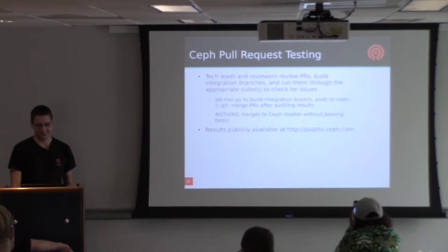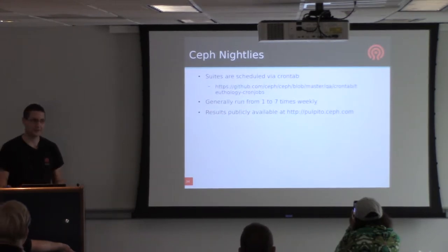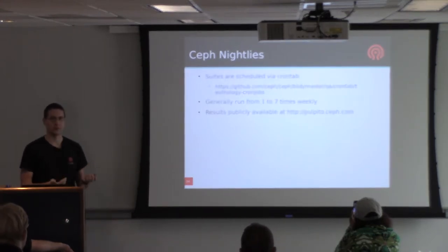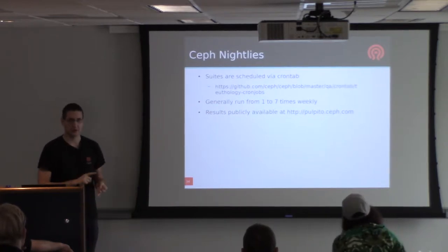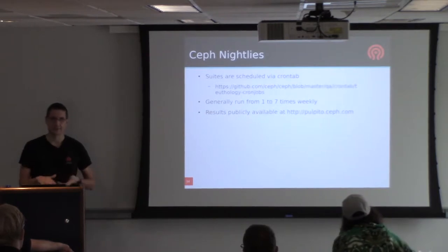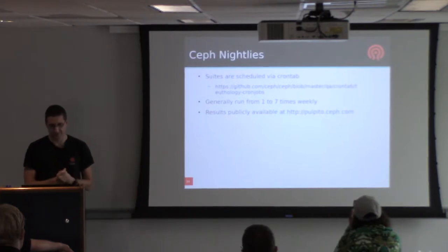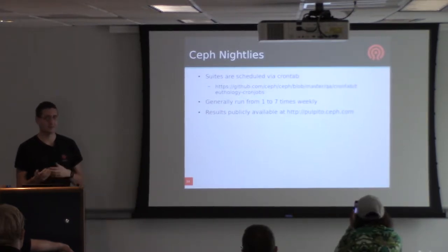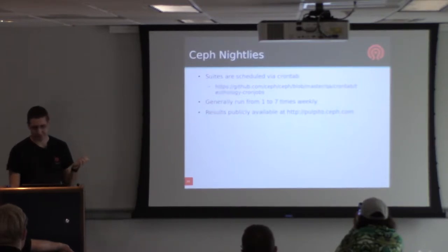Nothing merges into the Ceph project without passing the appropriate set of tests, so our master branch is pretty stable. Finally, we do nightly testing. Ceph is a big complicated distributed system and sometimes there are races that only turn up one in ten runs, or one in a hundred, or even one in several thousand. So we run nightly tests all the time against the in-development code and against stable branches we support as long-term stable. Tests run between every other week and every night, and those results are also publicly available.